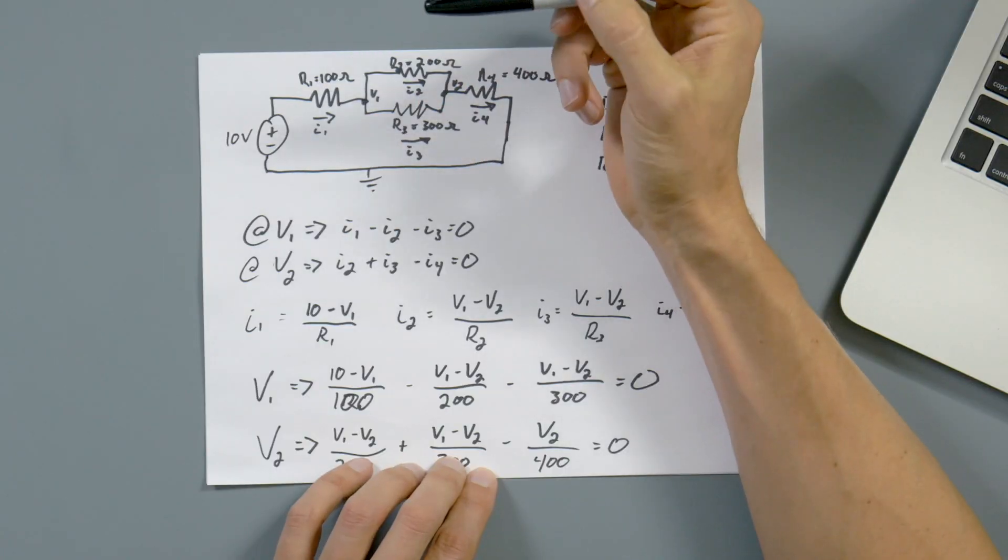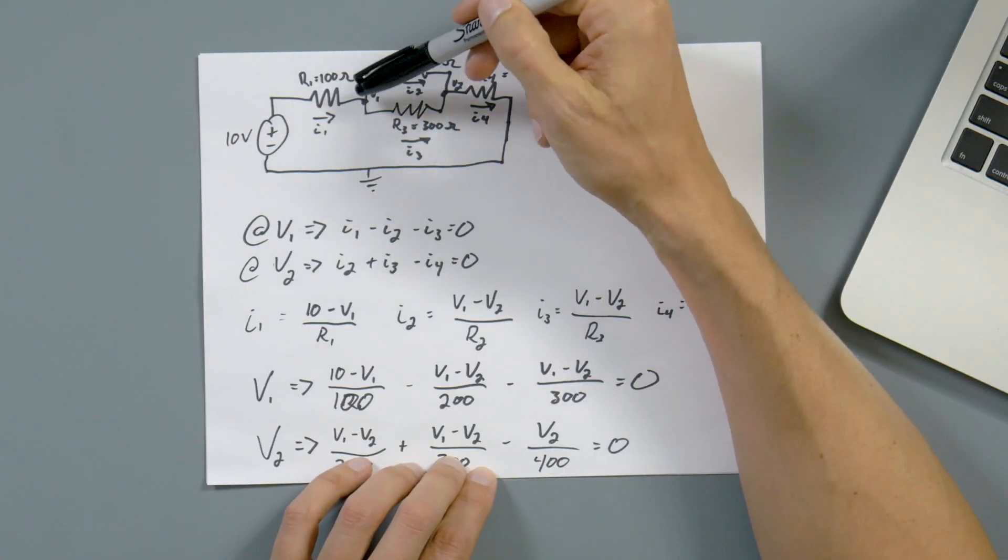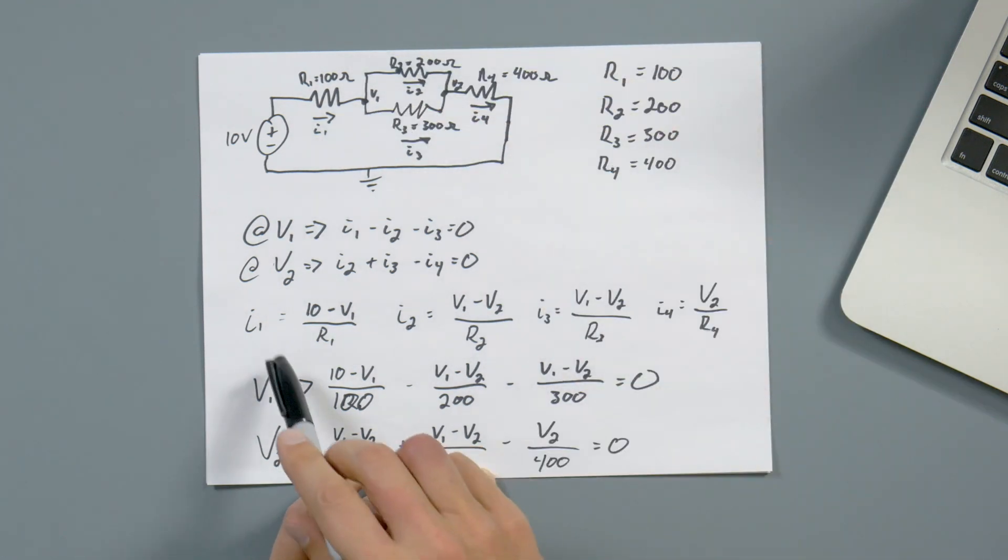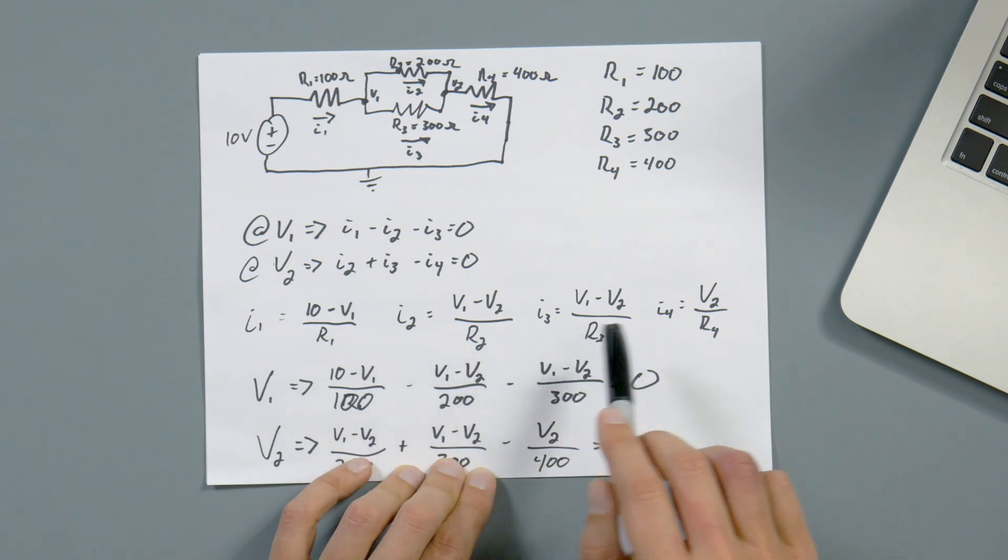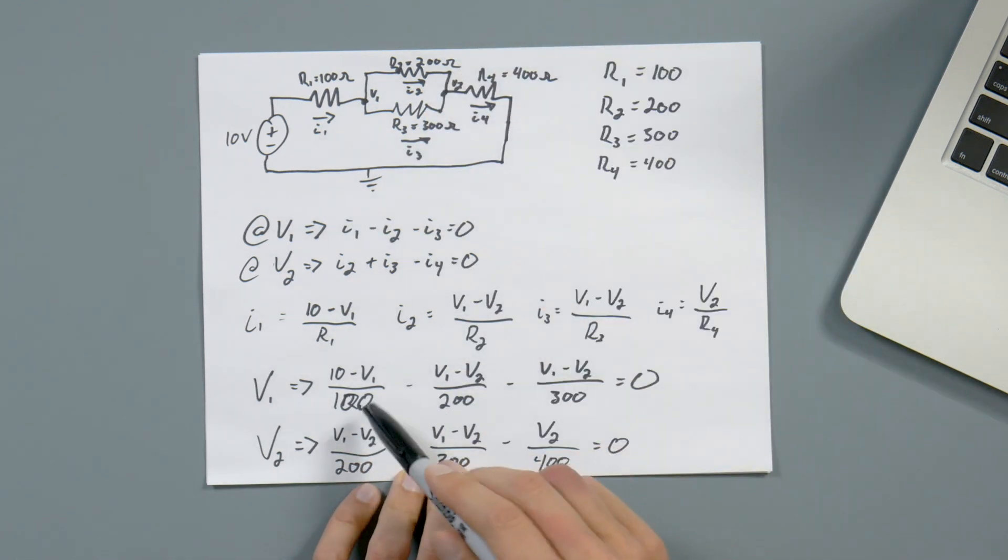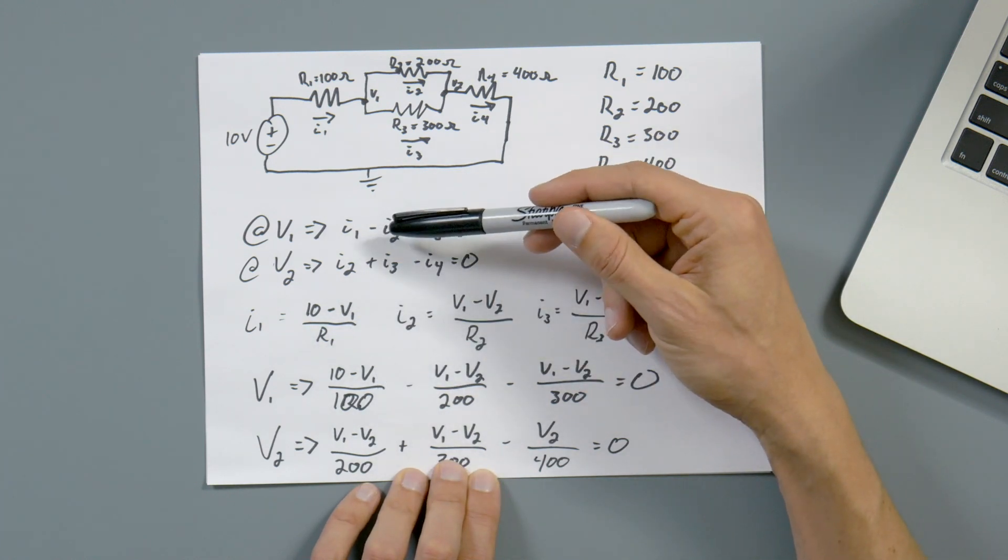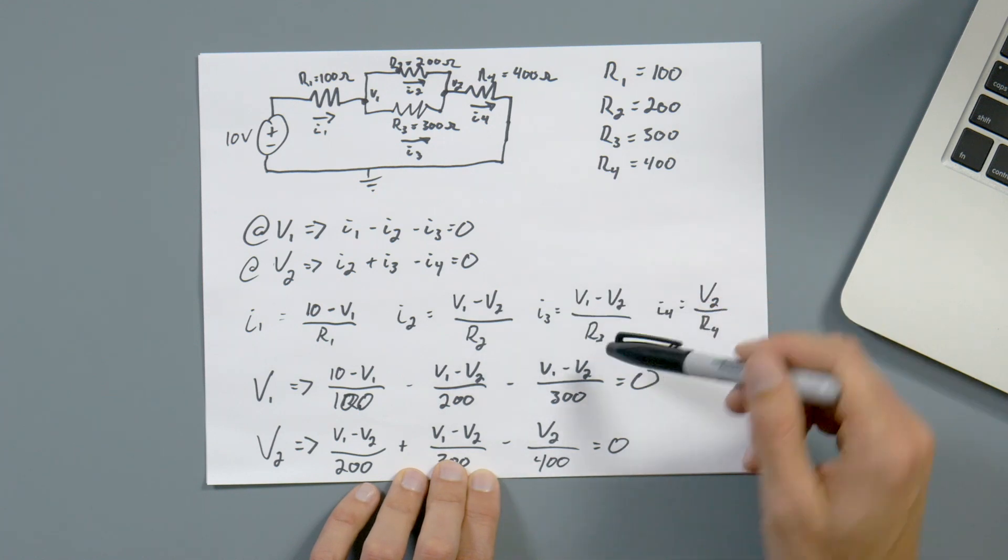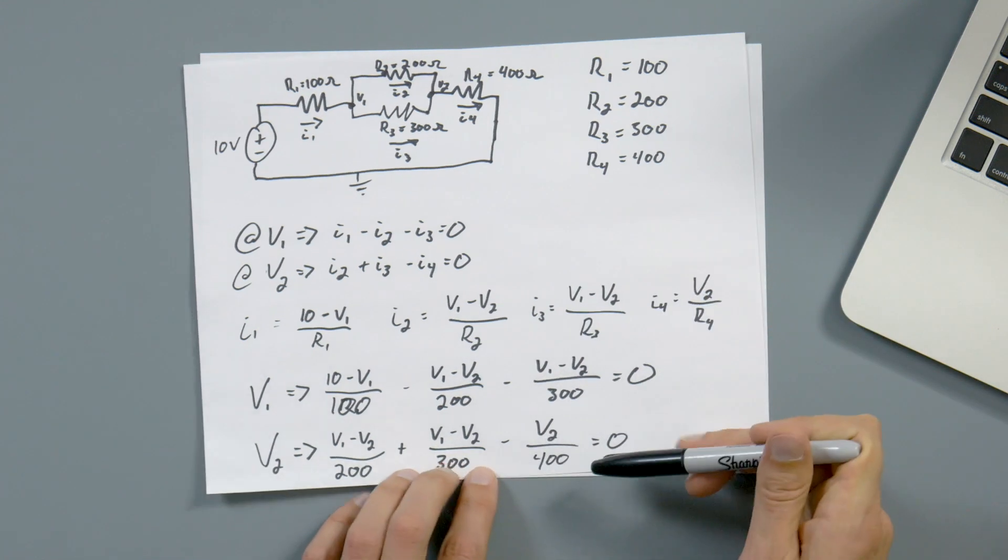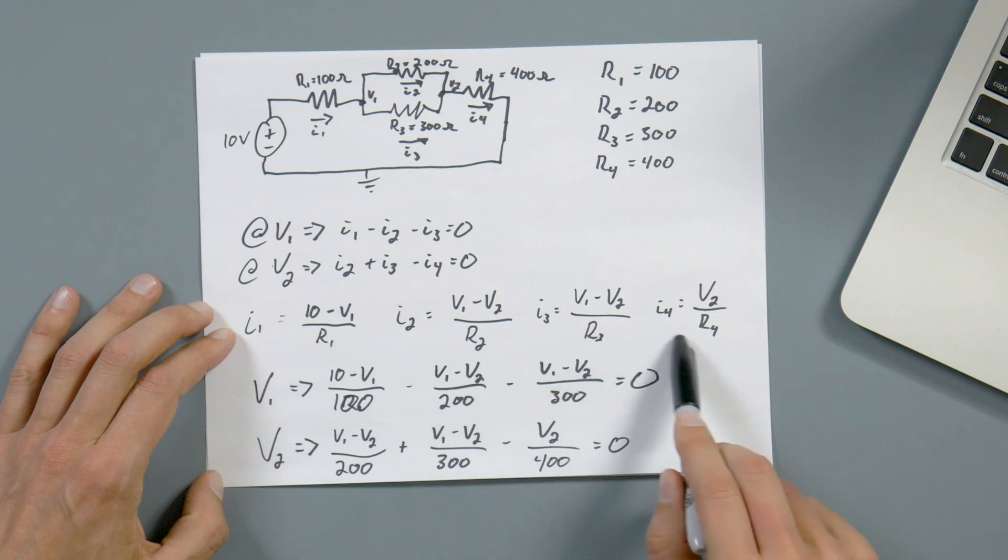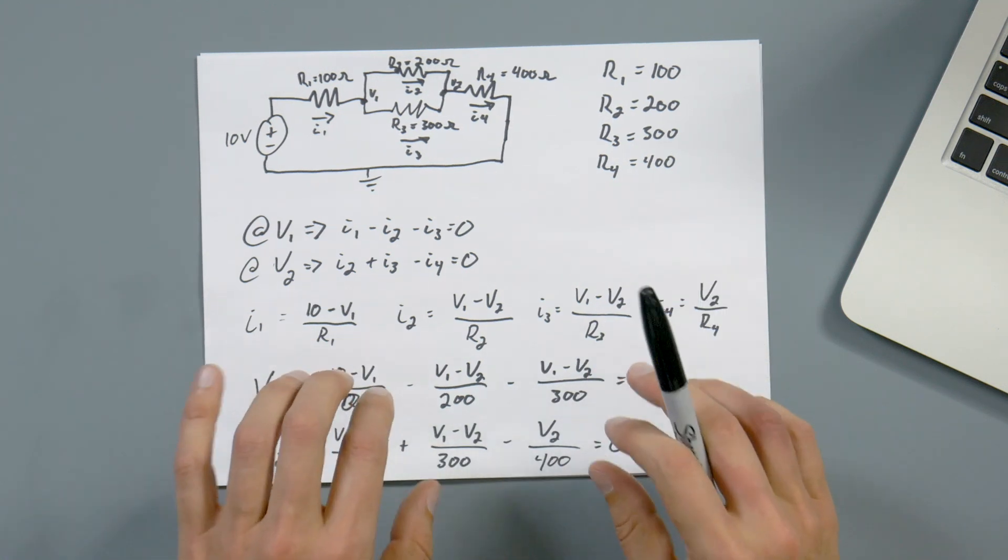Using KCL, we continue on. I1 is 10 minus V1 over R1, I2 is V1 minus V2 over R2, and so on. So I've written out what I1, I2, I3, I4 are, and then I've replaced those. So all of that setup was just to get to these two equations. So now we have two unknowns and two equations.